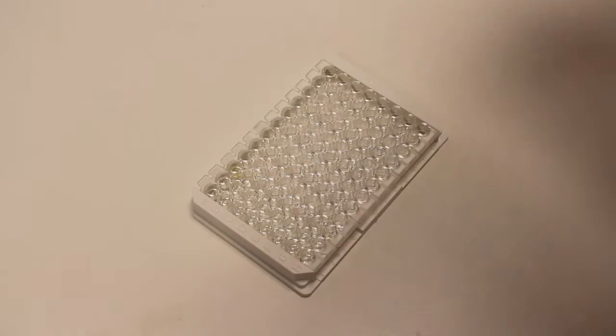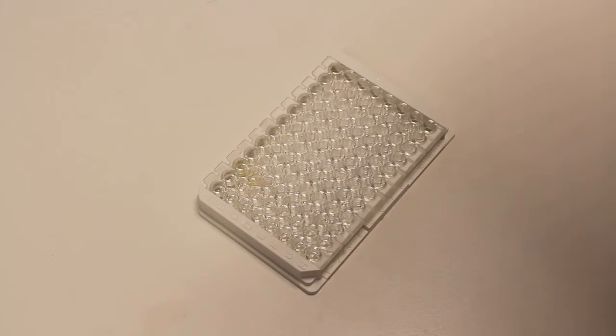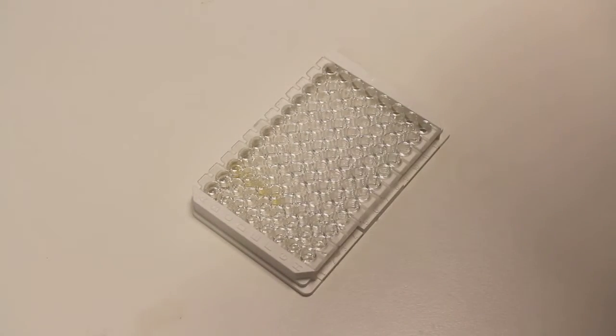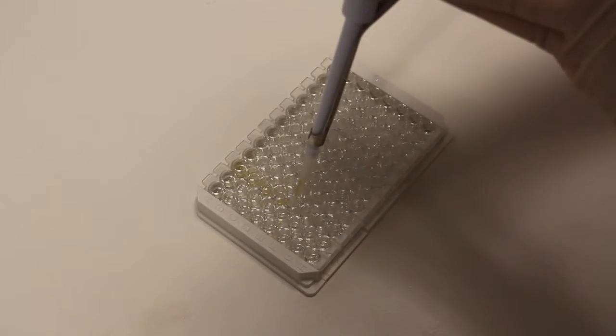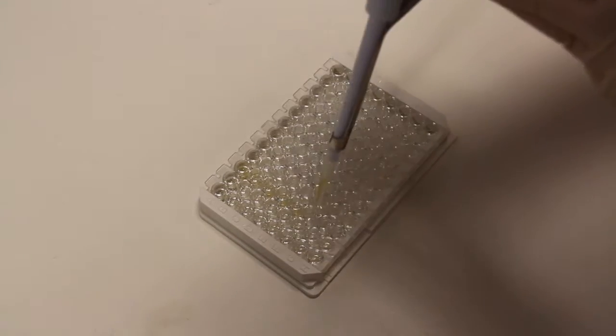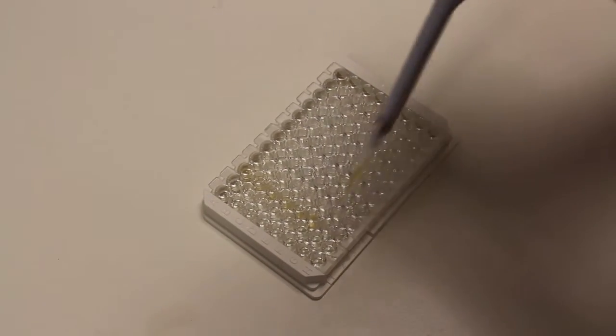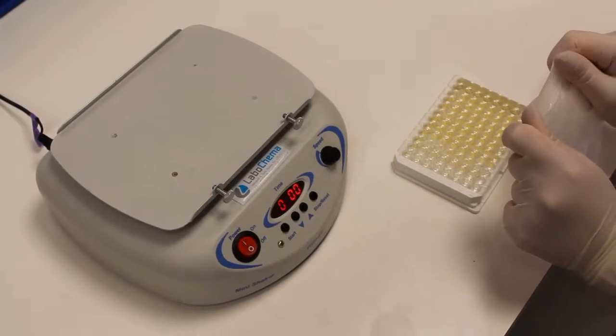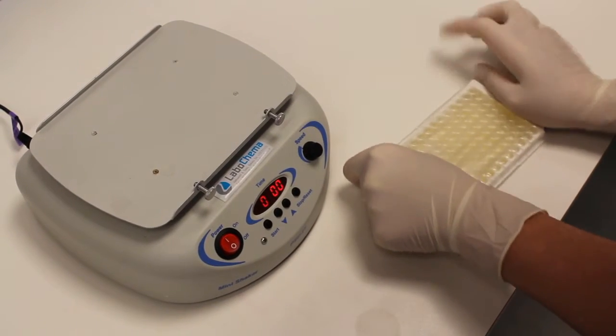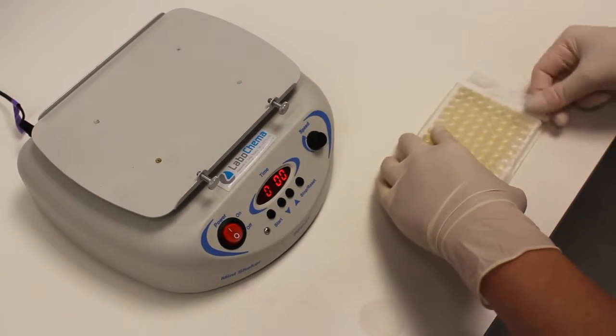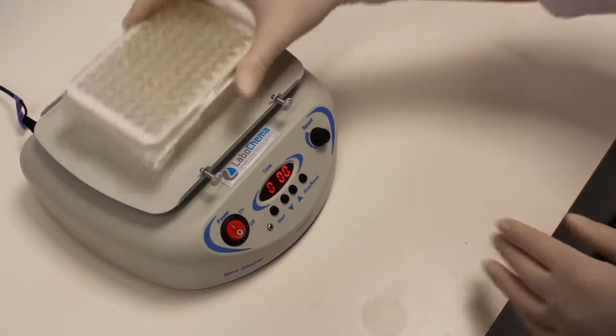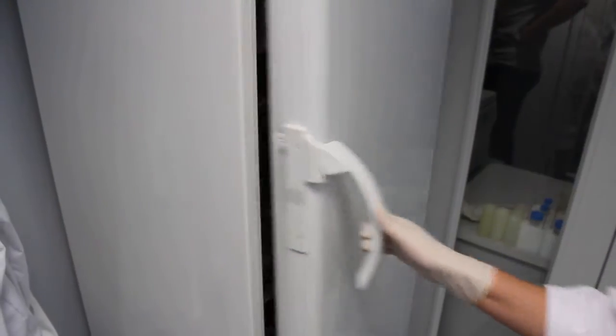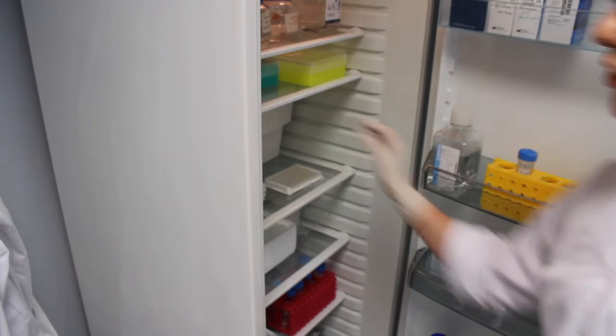Now we can load our samples. 100 microliters per well. We use diluted plasma samples 1:3. Transfer the plate to class 4 and incubate overnight.